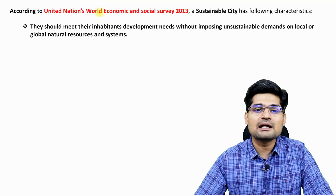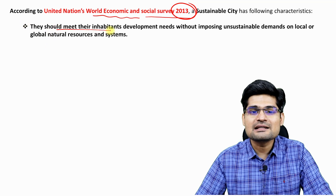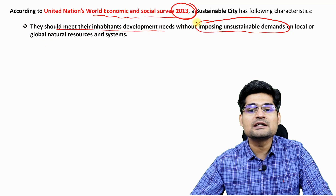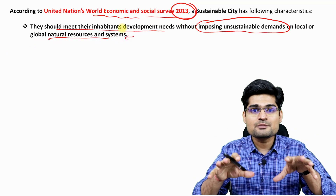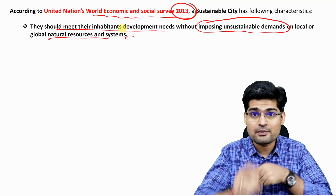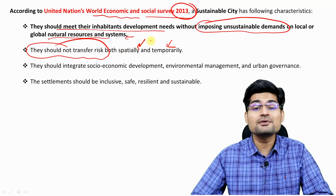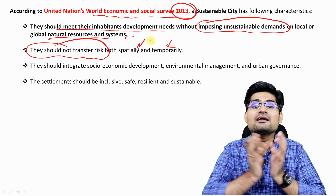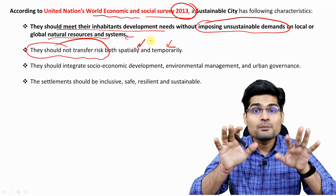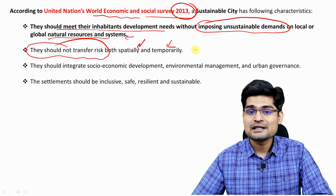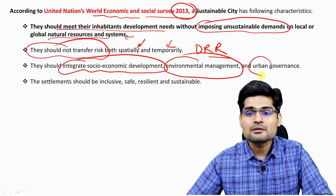According to the United Nations World Economic and Social Survey 2013, a sustainable city has the following characteristics: they should meet their inhabitants' development needs without imposing unsustainable demands on local or global natural resources. They should not transfer risk both spatially and temporally — spatial risk in terms of area and expanse, and temporally from present to future generations. The amount of risk we are creating should be minimized, so disaster risk reduction comes into the picture here. They should also integrate socio-economic development, environmental management and urban governance together.